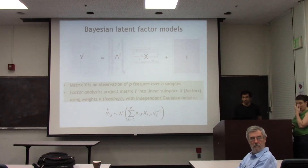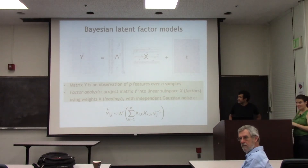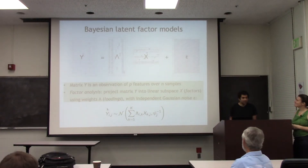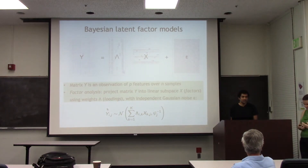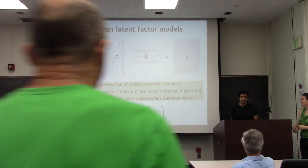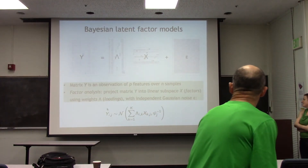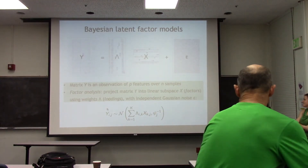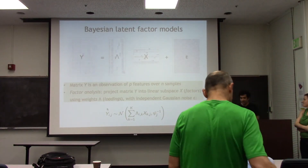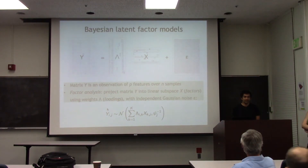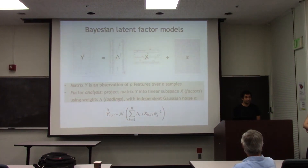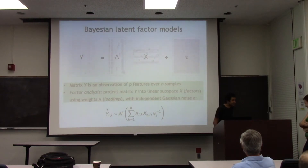It's my great pleasure to introduce Barbara Engelhardt from Princeton. Barbara did her PhD at UC Berkeley in computer science with Mark Jordan, and then she did a postdoc with Matthew Stephens. She's been doing a broad range of work looking at statistical models for high-dimensional genetic data.